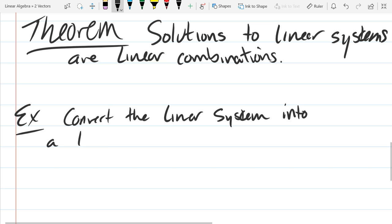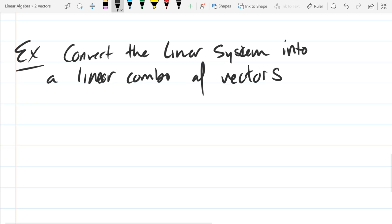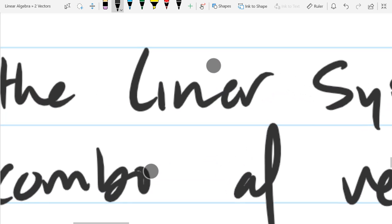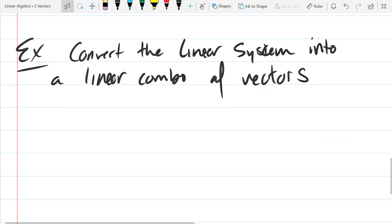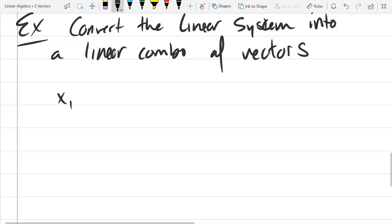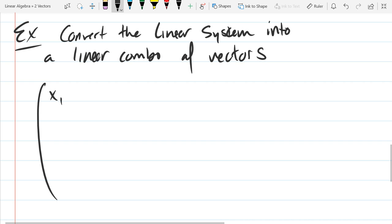So convert the linear system into a linear combo of vectors. So our system will be x1, x2, actually I'll write it in the form that's written in the book. So x1, x2, we're writing a column vector, x3, x4, x5, x6, x7. So we have seven variables.